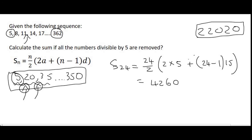So, let's see if this makes sense. The total sum for everything was 22,020. The sum of the divisible by 5 is 4,260. So, the main question says, calculate the sum if all the numbers divisible by 5 are removed. So, that answer will be 22,020 minus the numbers that are divisible by 5, which add up to 4,260. And, that's going to give us a final value of 17,760.